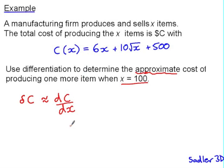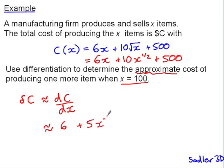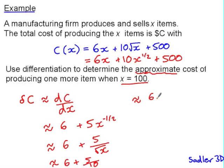And dc by dx is 6 plus 5 x to the negative 1 half, which is 6 plus 5 over root x. And when x is 100 this means 6 plus 5 over 10, i.e. 6.5. Now of course we are dealing in money here, so this is $6.50, and that is the cost of producing the 101st item after we have already produced 100 items.